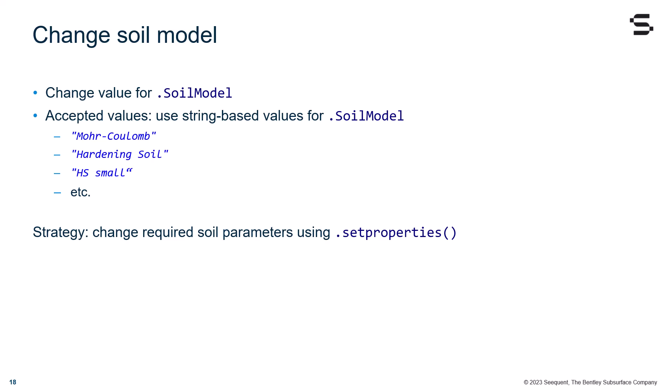HardeningSoil, HSsmall, etc. Notice that these are in quotation marks indicating a string. The strategy usually in this case is to change the required soil parameters using the setProperties command.